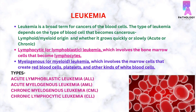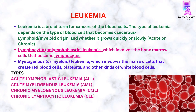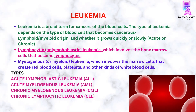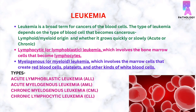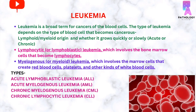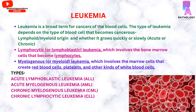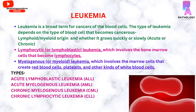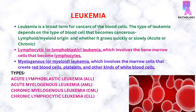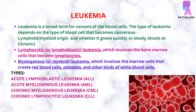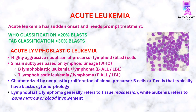The lymphocytic or lymphoblastic leukemias involve bone marrow cells that become lymphocytes, whereas myelogenous or myeloid leukemias involve the marrow cells that create RBCs, platelets, and WBCs other than lymphocytes. There are four types of leukemias: acute lymphoblastic leukemia, acute myelogenous leukemia, chronic myelogenous leukemia, and chronic lymphocytic leukemia.